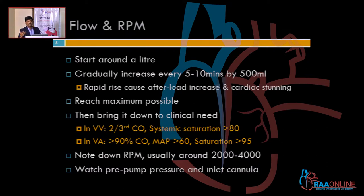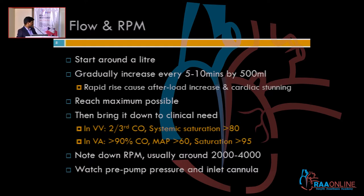Stunning of the ventricles can happen, so increase gradually. Keep RPM below 4000 — too high creates excessive negative pressure causing hemolysis and vein collapse. Watch the pre-pump pressures and the inlet of the draining cannula, because if you raise flow too much the cannula starts chattering, meaning you are trying to suck in too much blood too fast.